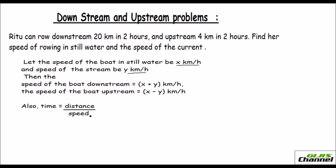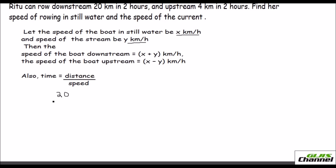We also know that time equals distance over speed. Now, using the problem: Ritu can row downstream 20 kilometers in two hours. So the time taken is two hours and the distance is 20 kilometers, and the speed downstream is x plus y. So the equation is: 20 divided by (x plus y) equals 2.